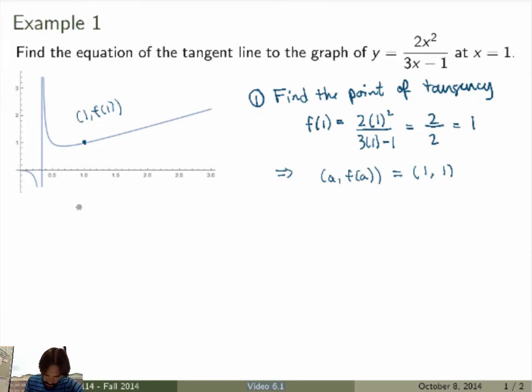Now the second thing we need is the slope of the tangent line. So find the slope. What is this? This will be the derivative of the function at the point x equals 1. So the first thing we want to calculate is the derivative.